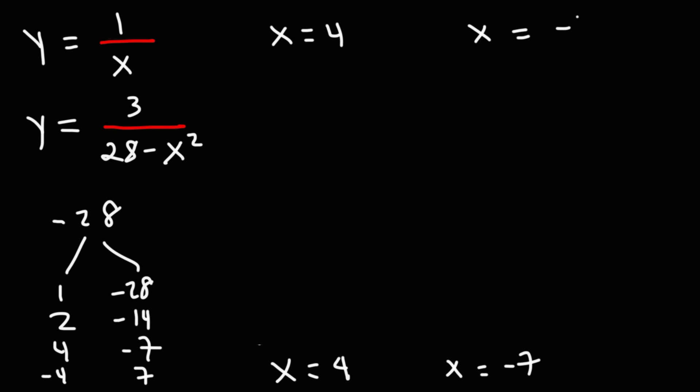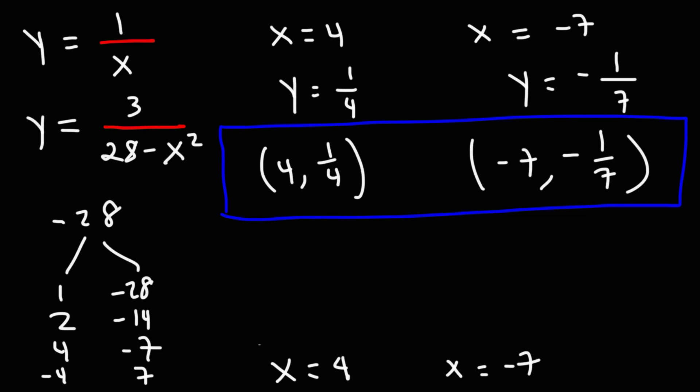Now, what we need to do is find the corresponding y values. If we plug in 4 into this equation, we'll get that y equals 1 over 4. And if we plug in negative 7 into that equation, we get that y equals negative 1 over 7. So to write our answer as an ordered pair, it's 4 comma 1 over 4 and negative 7 comma negative 1 over 7. So that's the solution to this system of rational equations.